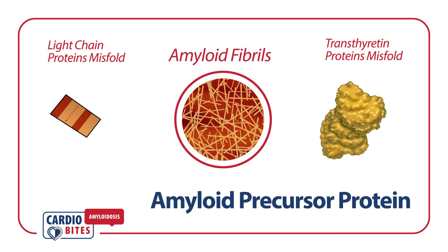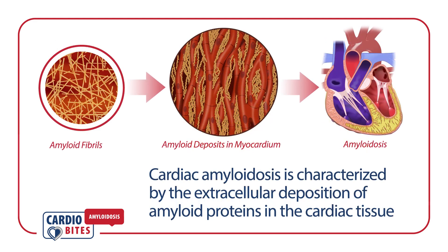There are several different types of amyloidosis and these types are classified based on their precursor protein. While any organ or tissue in the body may be affected by many of these amyloid types, cardiac amyloidosis is characterized by the extracellular deposition of amyloid proteins in the cardiac tissue.